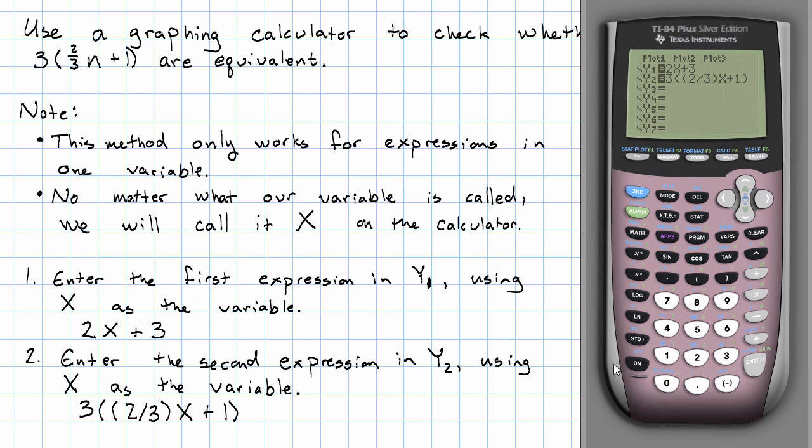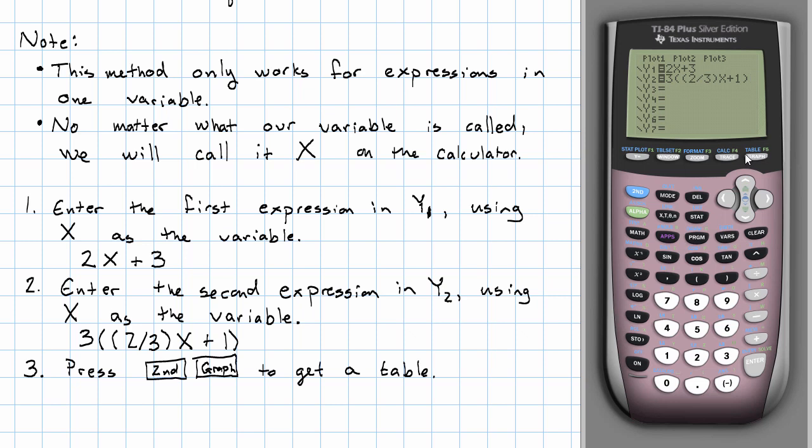Okay. Now, how am I going to get the calculator to plug a whole bunch of numbers in there? You see the word table in little blue letters above the graph button. When we hit second and then the graph button, we get a table. What do we see in this table?